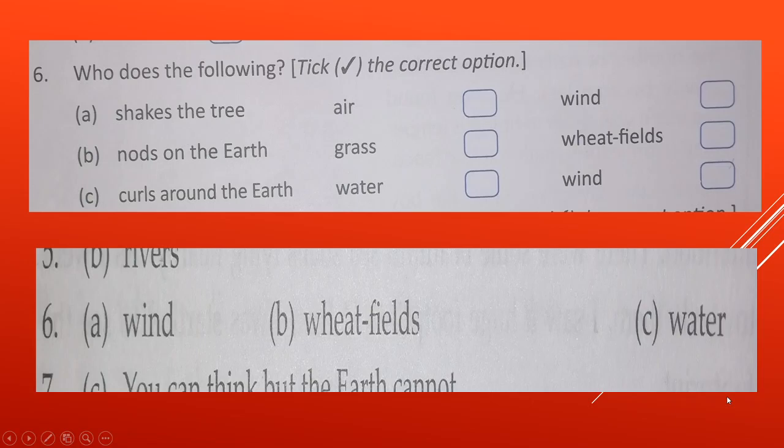Nods on the earth. What nods on the earth? Grass or wheat fields? Yes. Wheat fields will be the answer.